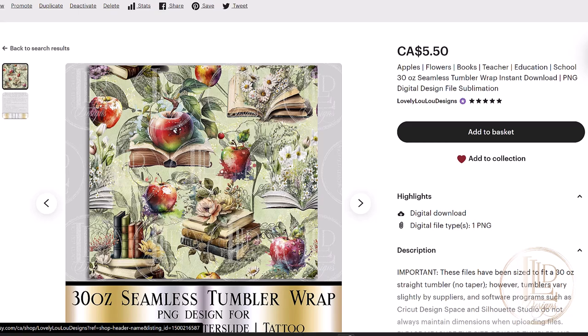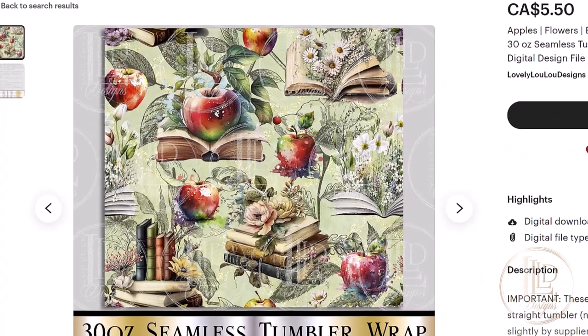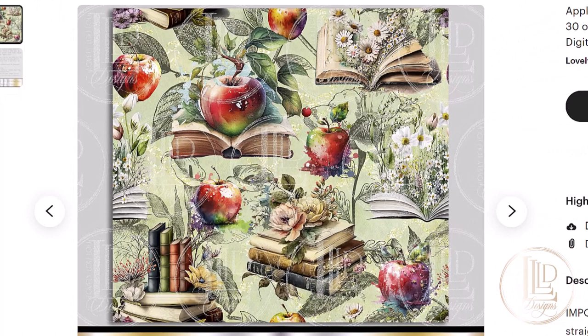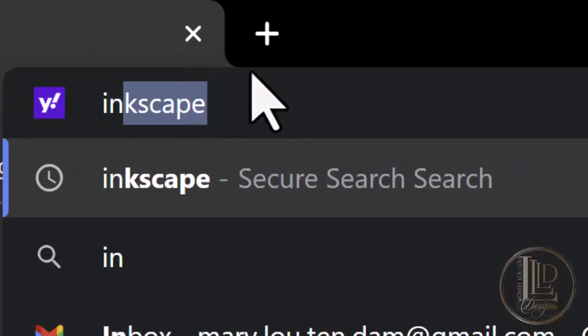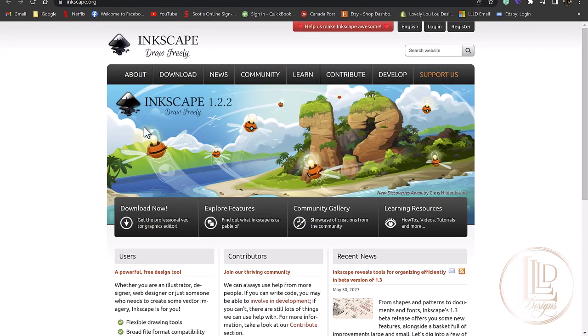Since this design is only being applied to the bottom part of the tumbler, I don't want to lose some of the details in the pattern so I'm going to scale the pattern down and tile it. If I were using this design as a full wrap, I would skip this step and use the design as is. To tile and crop the design, I will be using an open source software called Inkscape which I will link in the description section below. This software is completely free of charge.